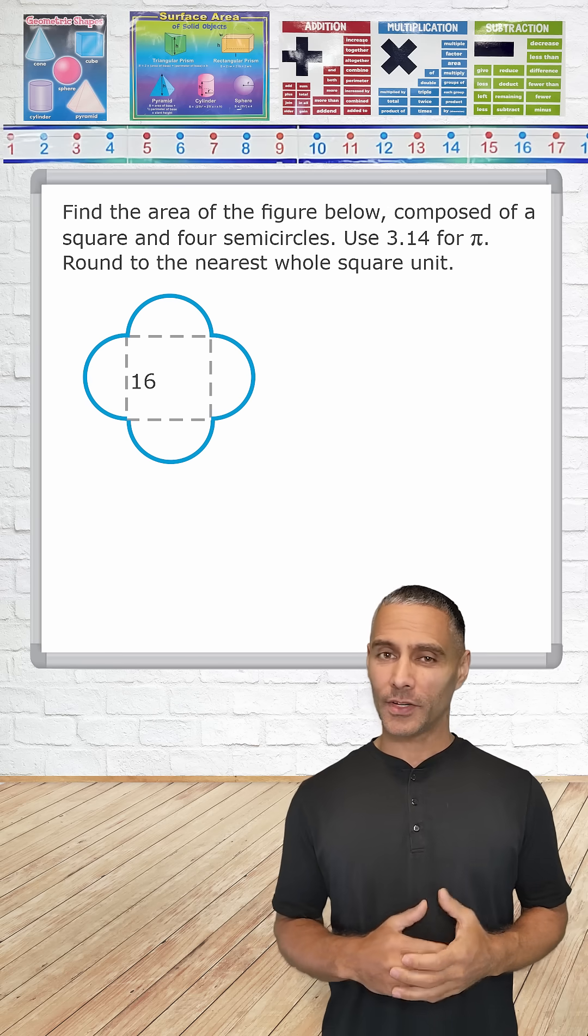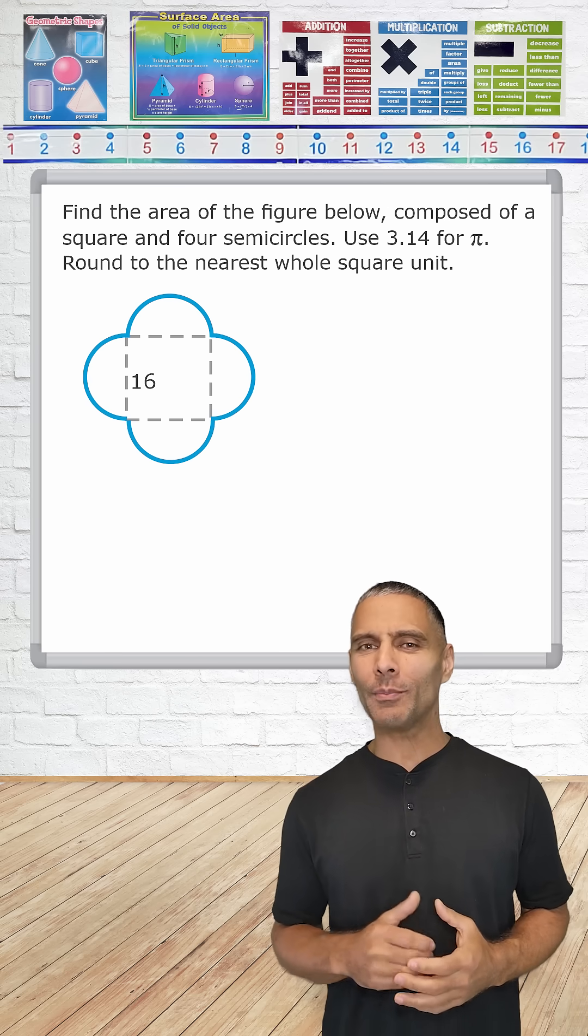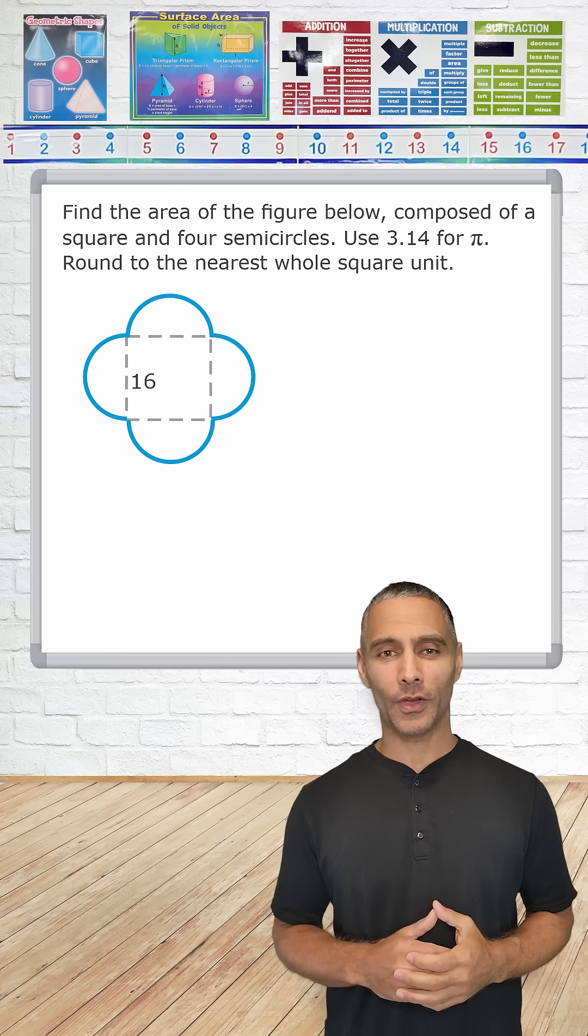All right, this problem is asking us to figure out the area of the figure shown which is composed of a square and four semicircles.